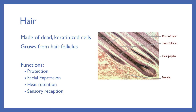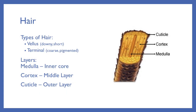Hair is made up of dead keratinized cells and grows from a hair follicle located in the dermis. There are two types: vellus hair, which is downy, short, soft, and nearly transparent due to low pigment — the fine fuzz you feel on your cheek — and terminal hairs, which are coarse and pigmented, like beard hair. During puberty, vellus hairs transition to terminal hairs, gaining pigment and becoming coarse and capable of growing long.